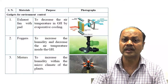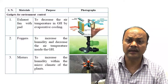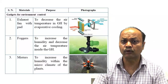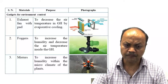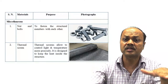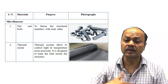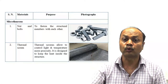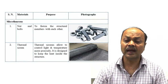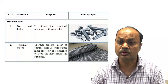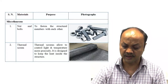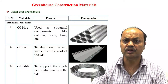Fogger is also used to reduce temperature, working on the evaporative cooling principle, which also increases RH inside the greenhouse. Mister is used at lower height to create suitable microclimate within the canopy of the plant. Nuts and bolts are used to fasten the structural materials. Thermal screen is used to prevent far infrared from escaping outside, so inside temperature is maintained in the evening. It also serves dual purpose of reducing light intensity.